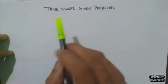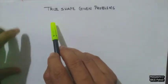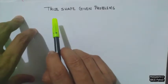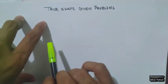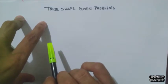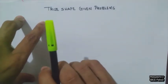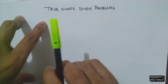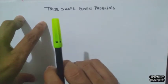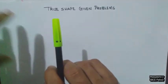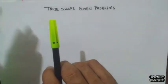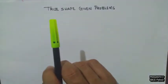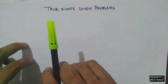Hello everyone. Now we will look into another case in sections of solids, which is true shape given problems. In that, the true shape of the section will be given, and from that information we have to draw the section plane. So section plane inclination will not be given in this case — from the true shape we have to find out the orientation of the section plane.